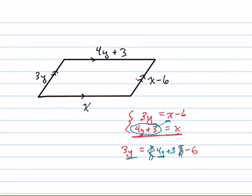Subtract y from both sides, you get negative y. And 3 minus 6 gives you negative 3. Now multiply both sides by negative 1, and you get y equals 3.